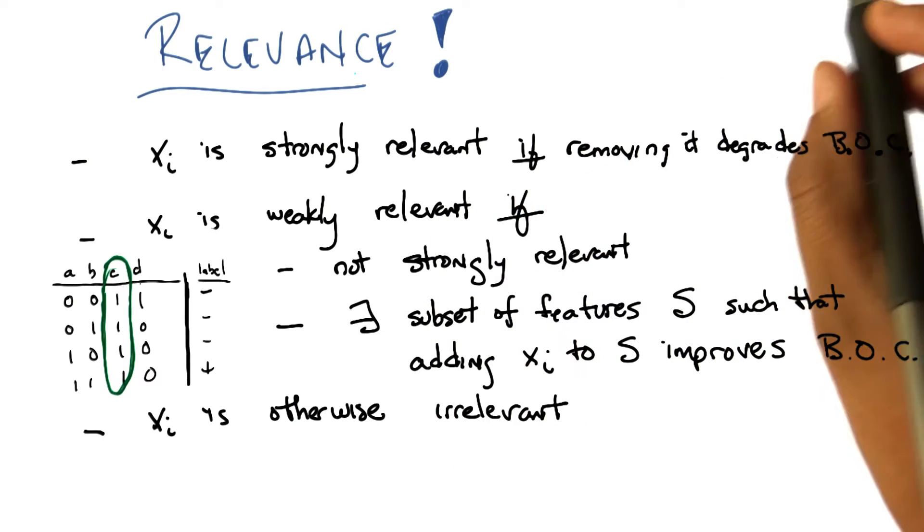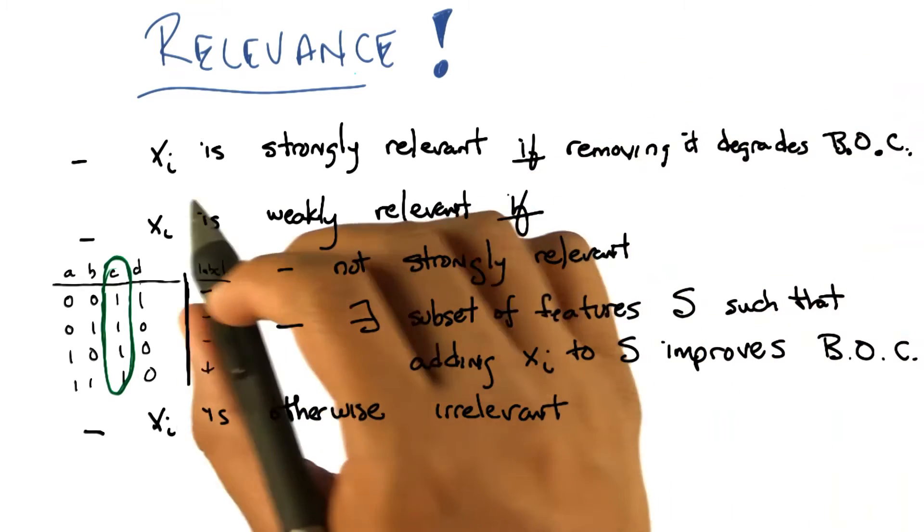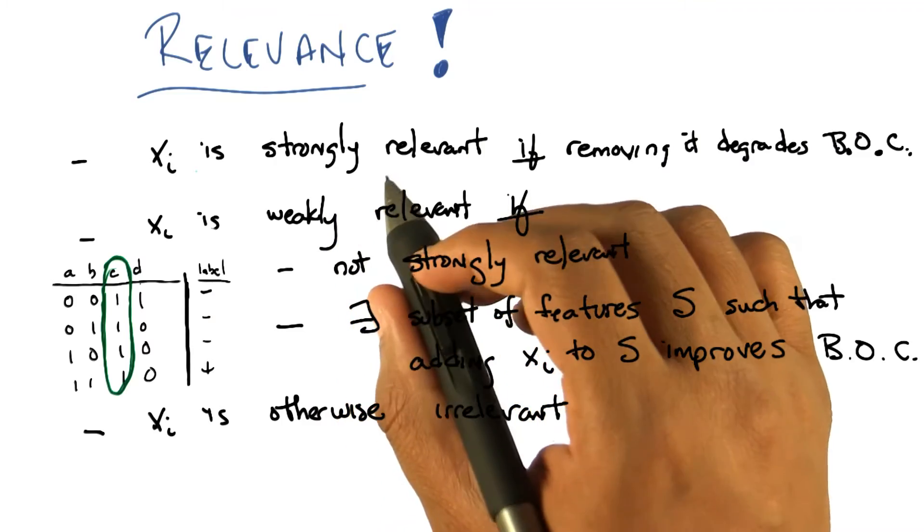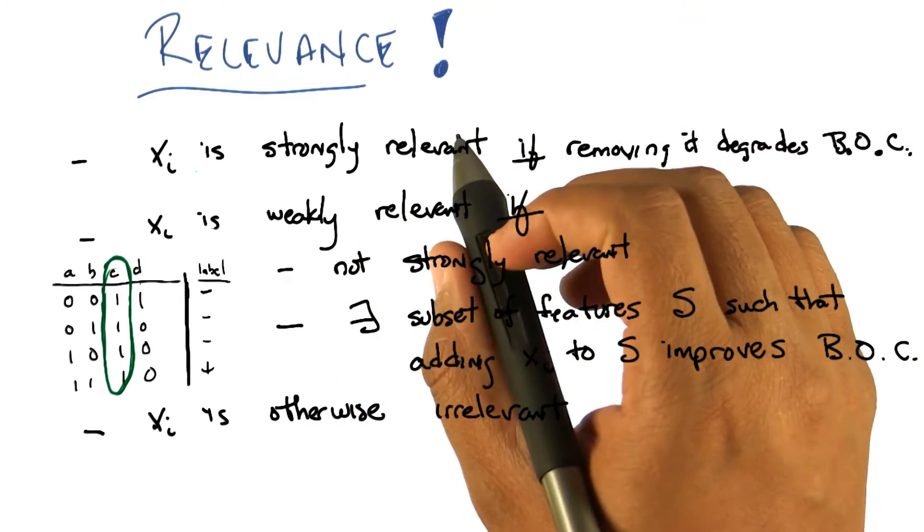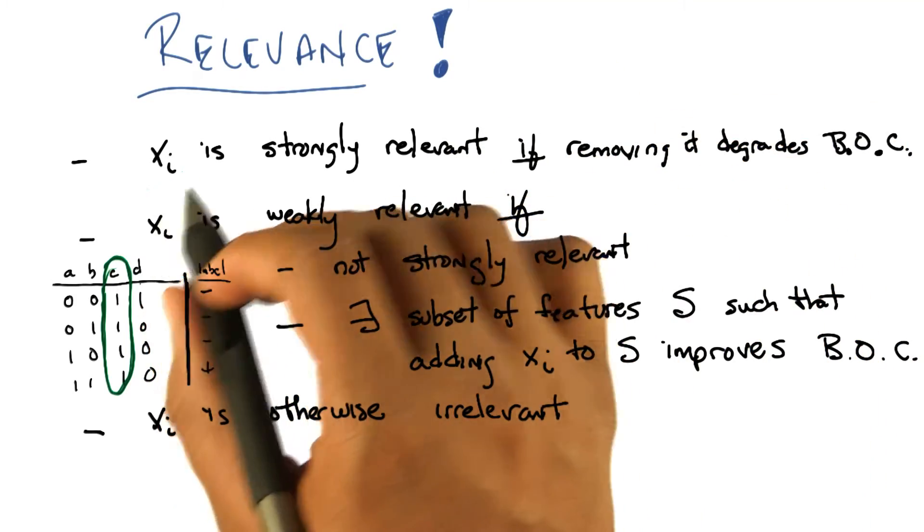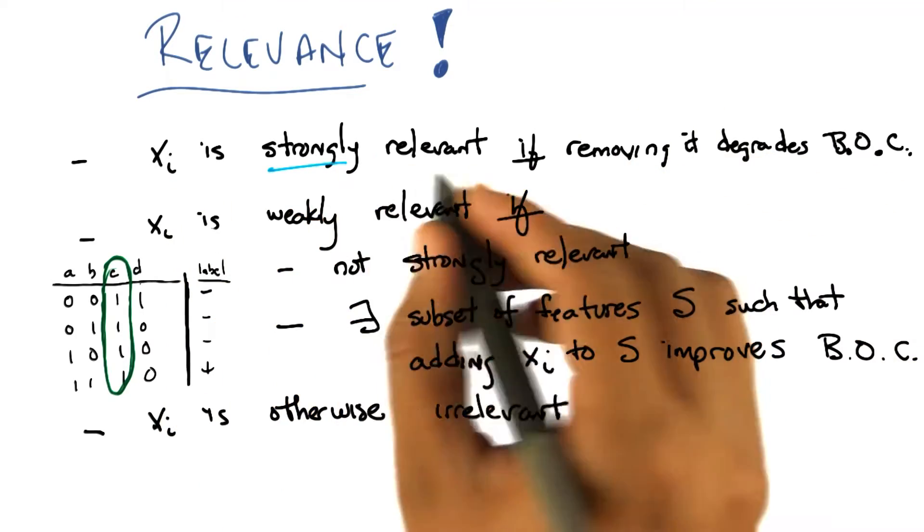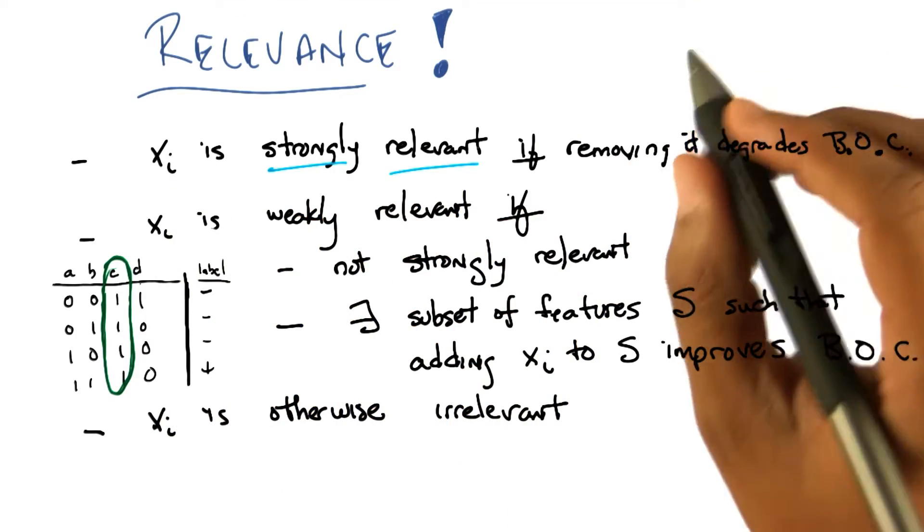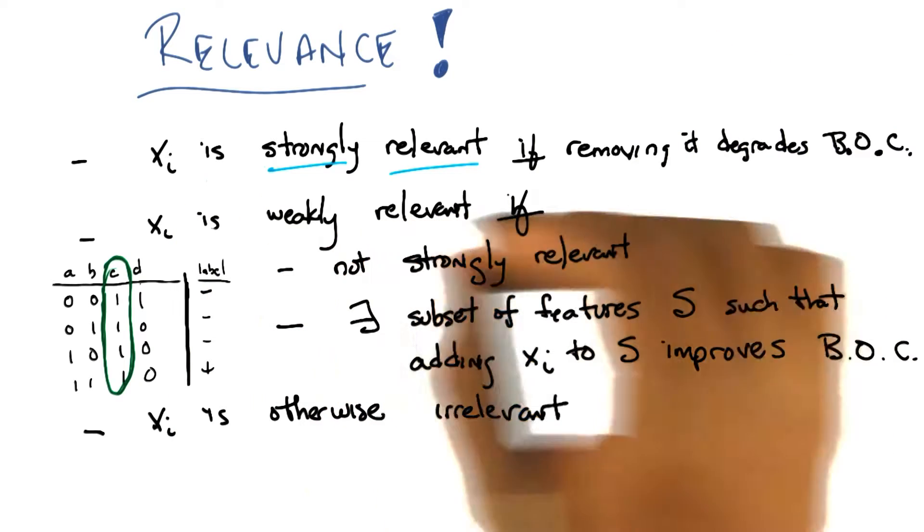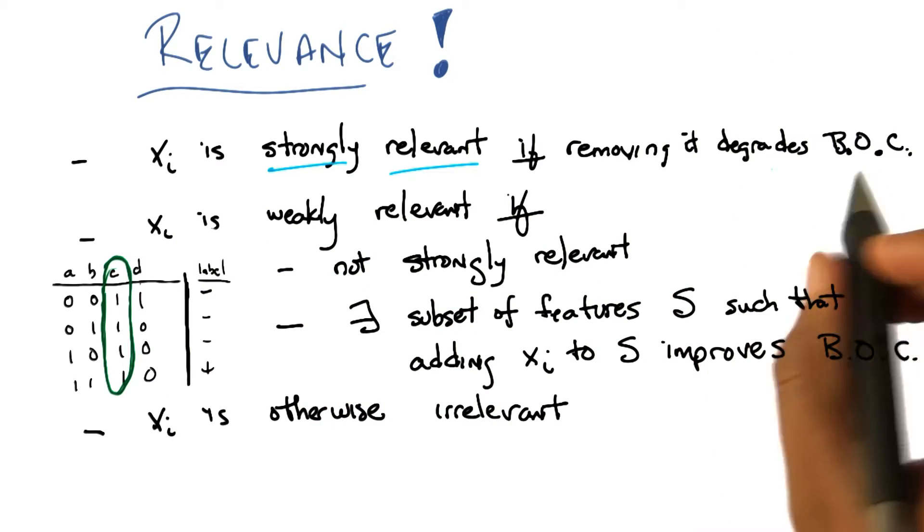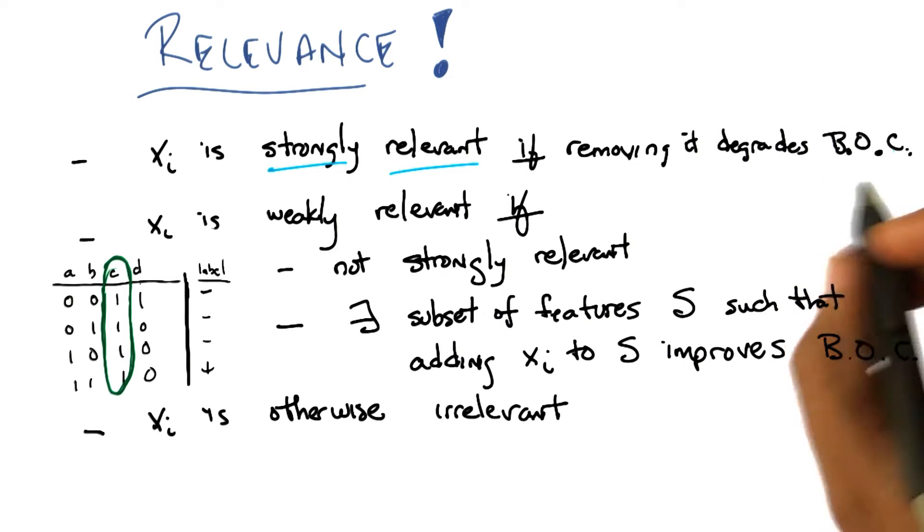So we have a set of features and let's just say they're x_i. So there's x1, x2, x3, dot dot dot, the xn features. And any particular feature x sub i is going to be strongly relevant exactly in the case if removing that feature degrades the Bayes Optimal Classifier. That's what BOC stands for. Okay? Does that make sense?